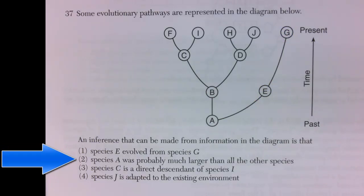Number two says species A was probably much larger than all the other species. There is no information in the diagram that indicates the size of the species represented by the letters. So you can eliminate that answer as well.